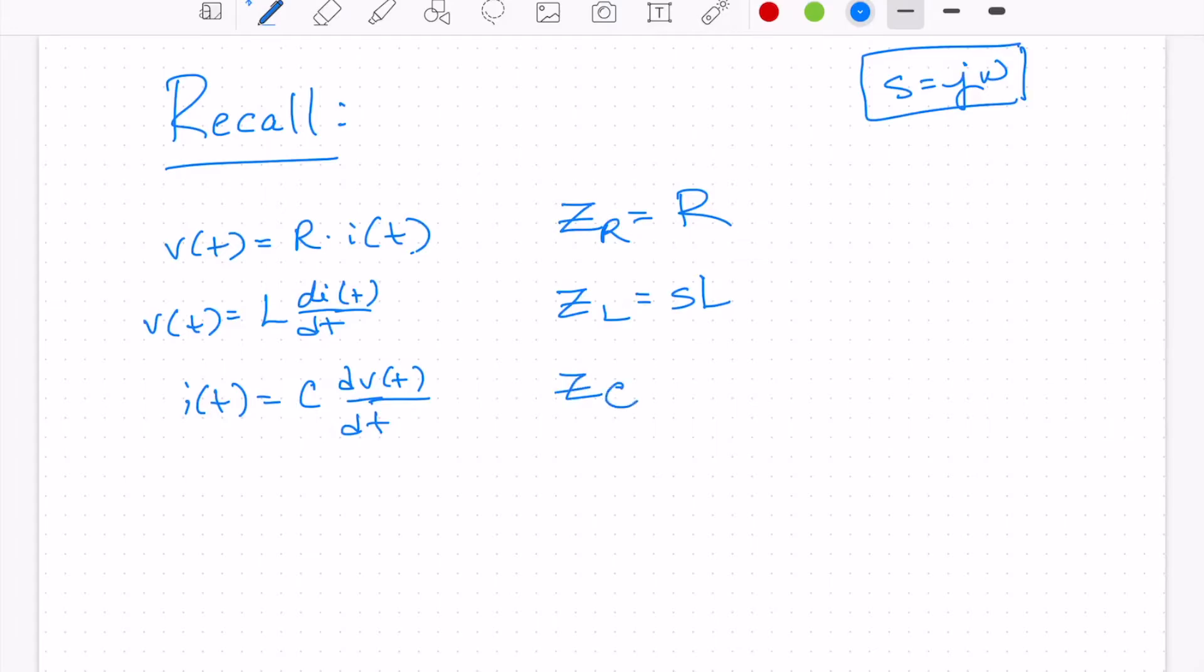For a capacitor, we can write the impedance of a capacitor is 1 over SC, where C is the capacitance.